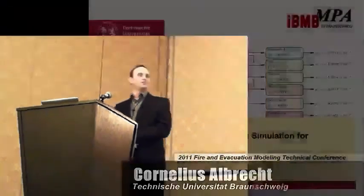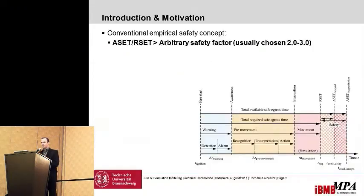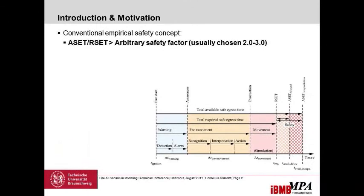Thank you for the kind introduction. I want to talk about probabilistic CFD and evacuation simulation for life safety assessment today. We know the conventional safety concept: the available safe egress time over the required safe egress time must be greater than 1, and we also typically use safety factors chosen between 2 and 3.